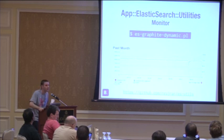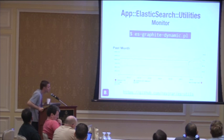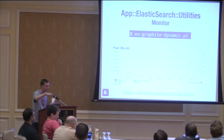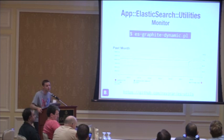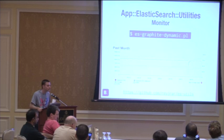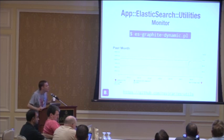Elasticsearch has a monitoring suite called Marvel that uses Elasticsearch to monitor Elasticsearch — the problem being that if Elasticsearch isn't working, your monitoring isn't either. They recommend building a separate cluster to monitor with Marvel. I prefer using Graphite since most of this is just time series data. We wrote a script that scans the full Elasticsearch stats API and dumps all that data into Graphite for you.